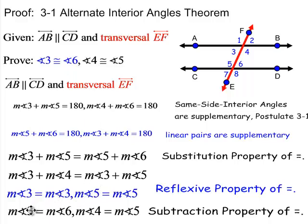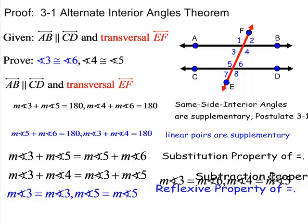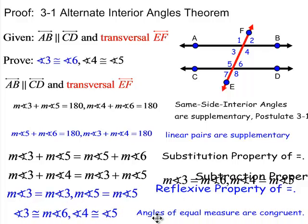With the other set, you have the measure of angle 3 on each side, so you subtract that out and you get the measure of angle 4 and angle 5. By the substitution property — substituting them in for each other since they're all equal to 180 — and then the reflexive property to subtract out the measure of angle 5 and the measure of angle 3, the subtraction leaves us with the measure of angle 3 equal to the measure of angle 6, and the measure of angle 4 equal to the measure of angle 5. Since those angles are of equal measure, we can conclude they are congruent.